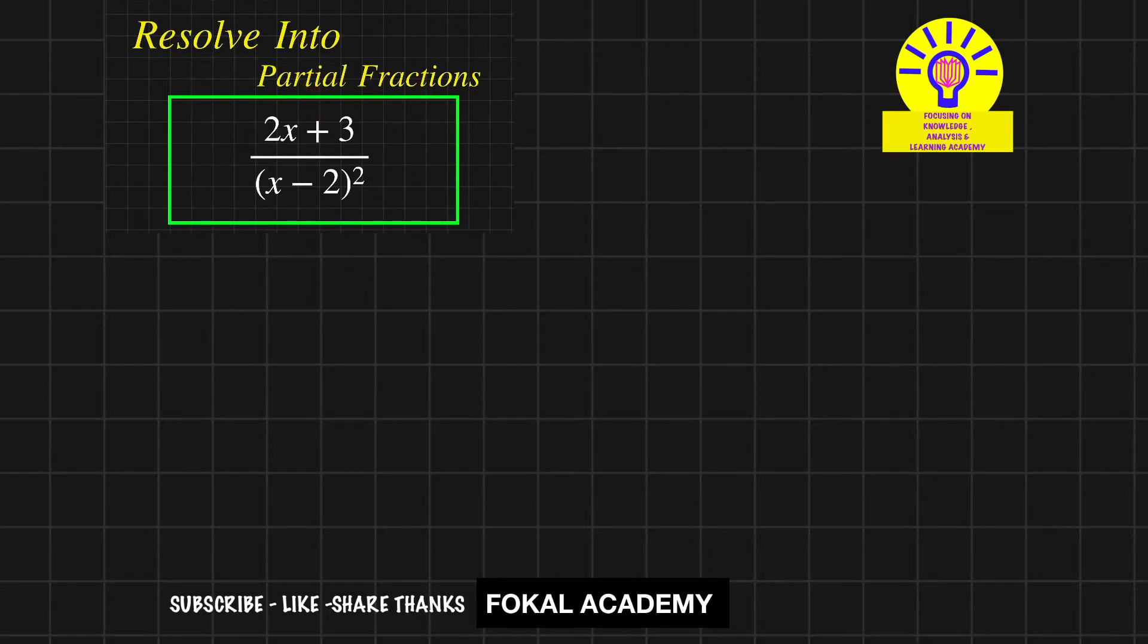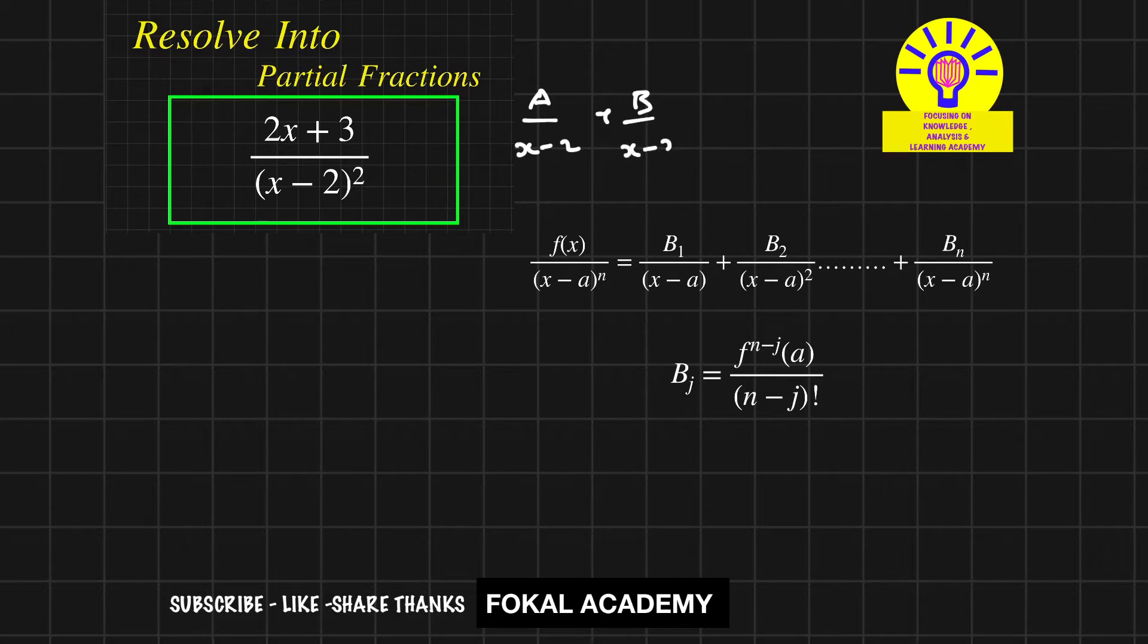When you observe the denominator, there are repeated factors, so we have a shortcut method. Whenever the function has repeated factors up to n times, it can be written as A/(x - a) + B₁/(x - a)² + B₂/(x - a)³ + ... + Bₙ/(x - a)ⁿ.